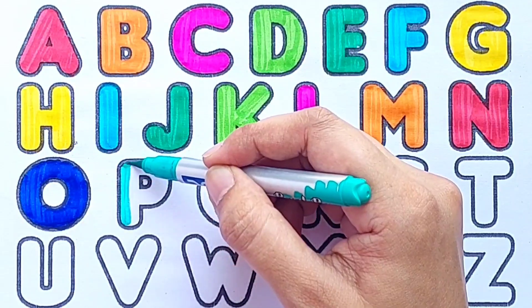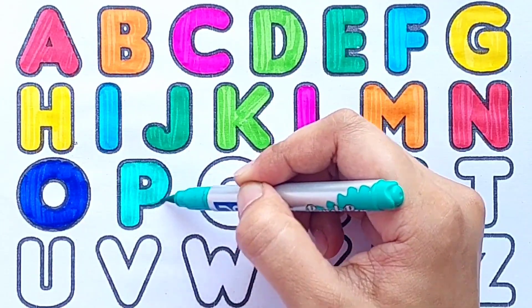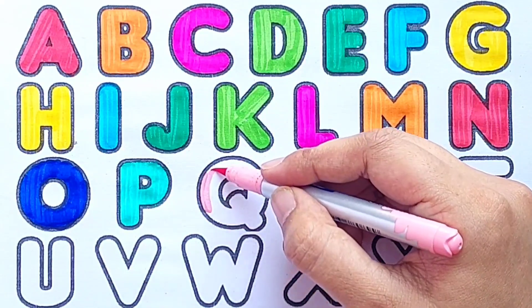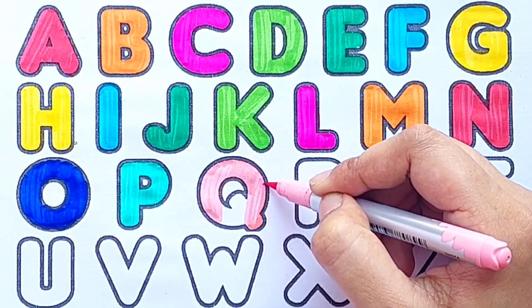Sea green color P, P for Parrot. Light pink color Q, Q for Quilt.